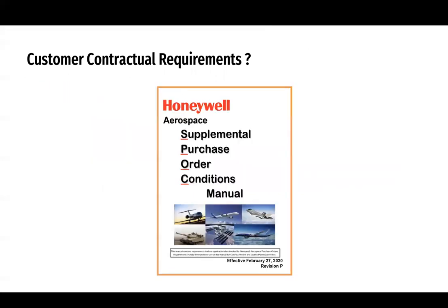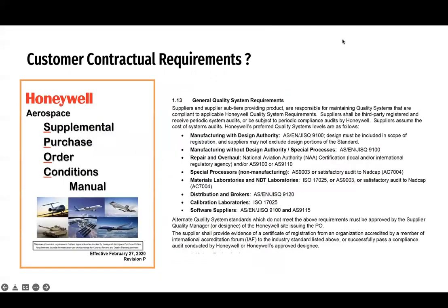Similarly, looking at another aerospace company — Honeywell — they have a document called Honeywell SPARK, which again has requirements with respect to quality management systems. If you are a manufacturer with design authority, you should have 9100. If you are a manufacturer without design authority or you do special processes like heat treatment or chemical processing, you also need 9100. For MRO industries, 9110 is required if the scope fits. These are the quality management system requirements that form part of your contractual requirement from customers.